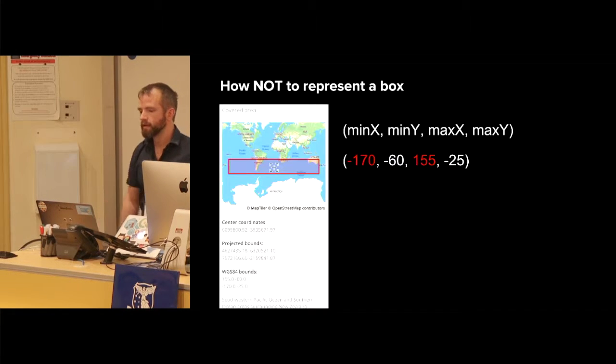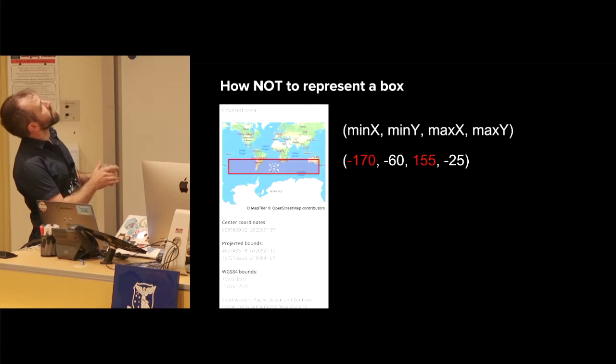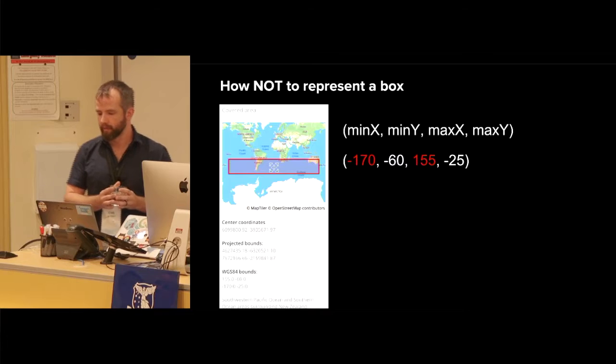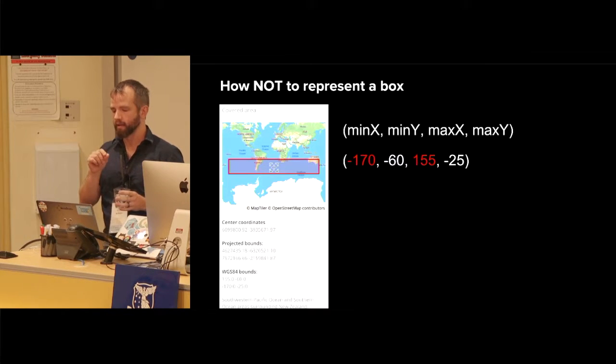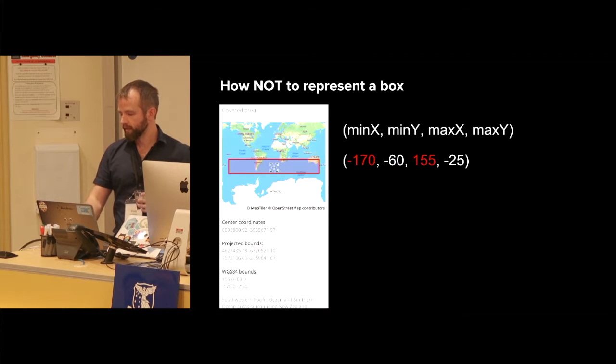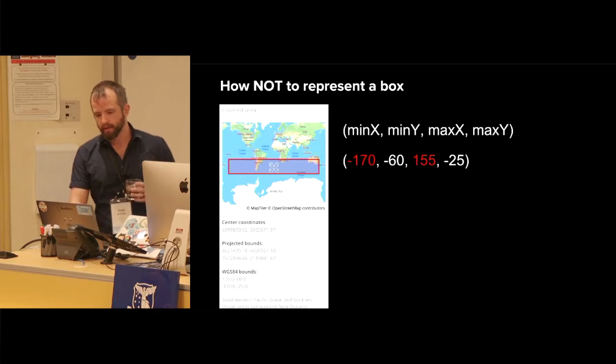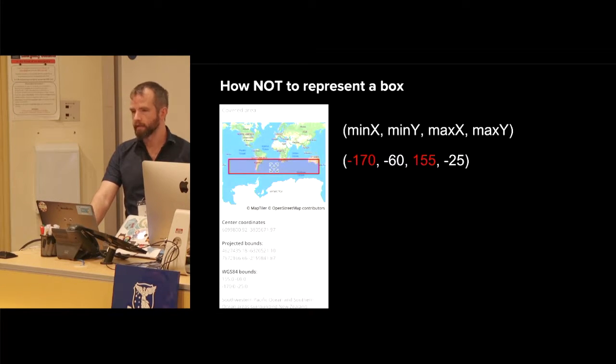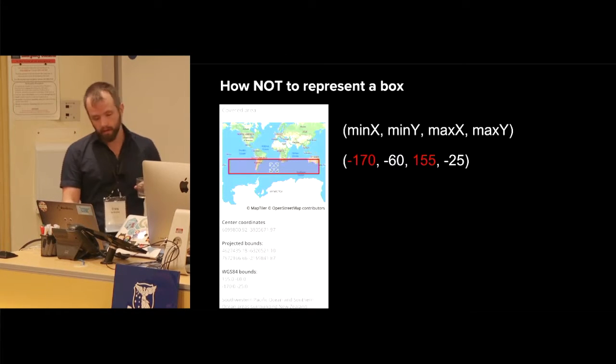What this website has done is they might have represented this red box thing as four things. This is a really common way of representing a box. You might represent a box with four numbers: min x, min y, max x, max y. That's great, except in this case, the min x is minus 170, and the max x is 155. This way of representing a box is going to cause ambiguity. That can represent two different boxes.